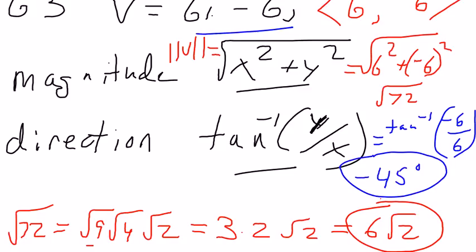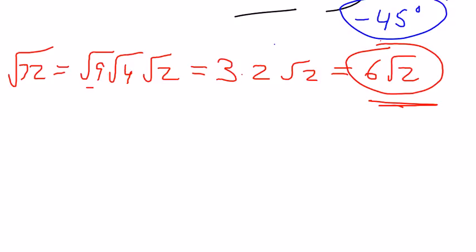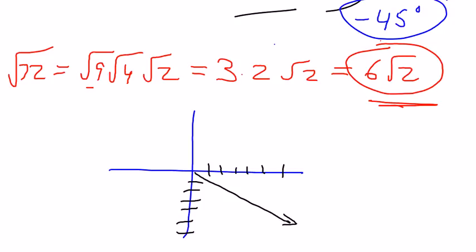Okay, now let's see if that makes sense. So here is my coordinate system. The vector in question is 6, negative 6. So it goes down here. All vectors, the direction angle of all vectors are measured from the positive x-axis. So would it make sense that this is 45 degrees?